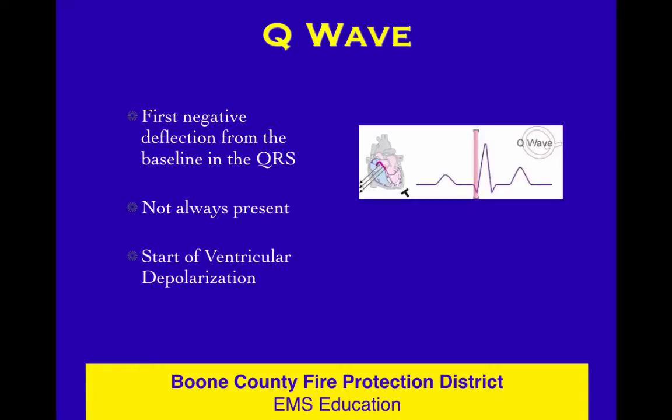What's the Q wave? It's the first negative deflection from the baseline. You don't always see them. If they're wide and deep, they may indicate that the person is having an infarct — a myocardial infarction, a heart attack. We'll get into that in level two or three. For now, just know that the QRS complex starts with a Q — a lot of times there's a little negative deflection, and sometimes it's not there at all.